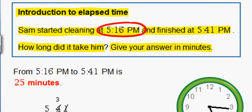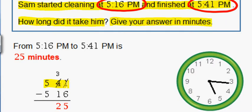So we started at 5:16 and ended at 5:41. We can take that and write that out as a subtraction problem, taking the larger number minus the smaller number.